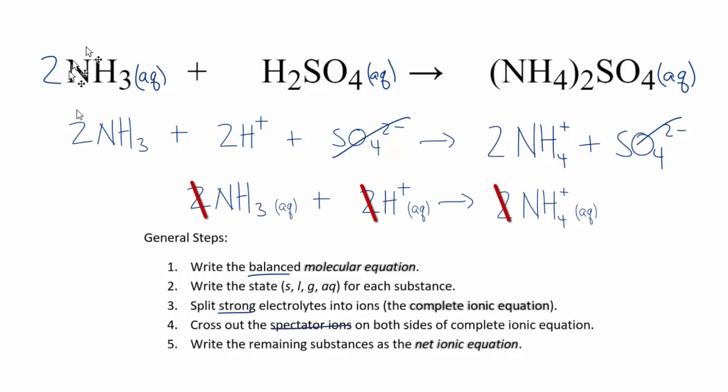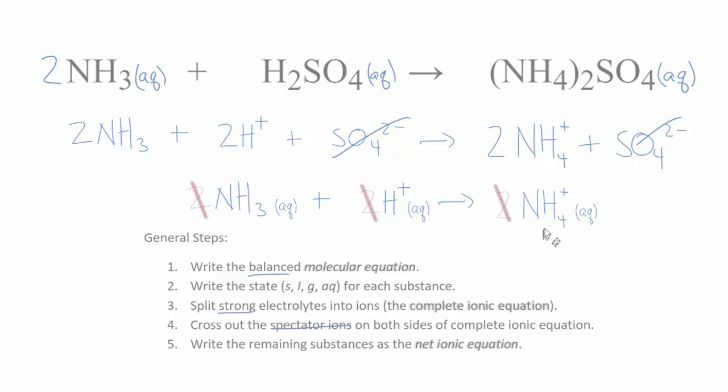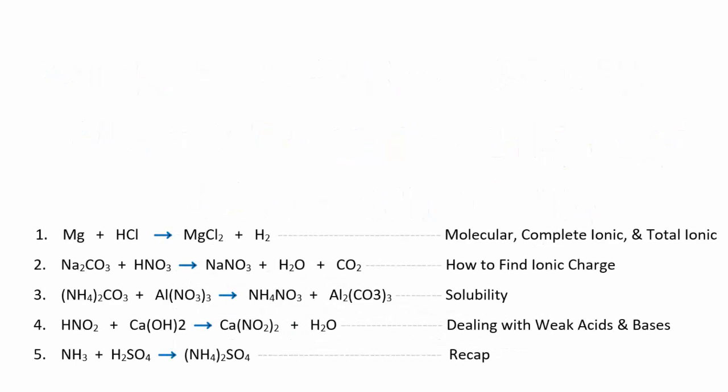Crossing out the SO₄²⁻ on both sides (spectator ion), we write the net ionic equation. Remember: a weak base like NH₃ doesn't break apart into ions even though it's aqueous. That's our final net ionic equation. If you're still with me, you should be a pro at net ionic equations. There's a link to a playlist with even more practice. This is Dr. B with practice writing net ionic equations — thanks for watching.